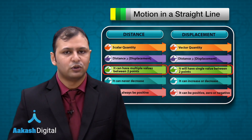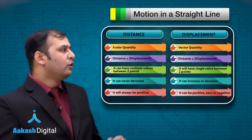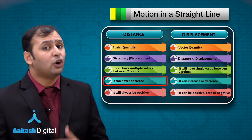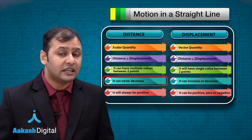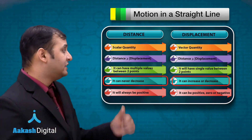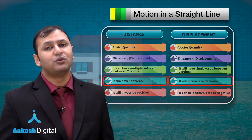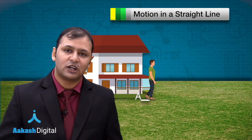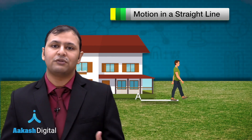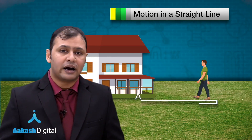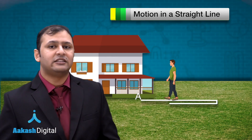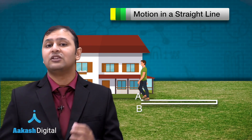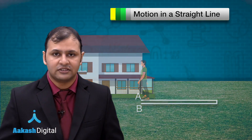Now for a moving object, distance can never decrease — it will always increase — whereas displacement can decrease for a moving object. Let's suppose an object was moving away from home and then returns back. In that case, displacement will first increase and then decrease, whereas distance will never decrease.